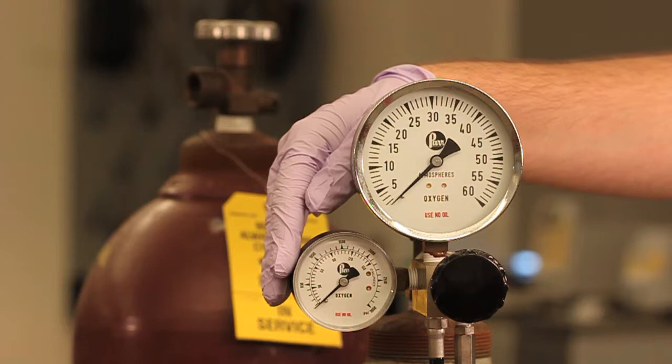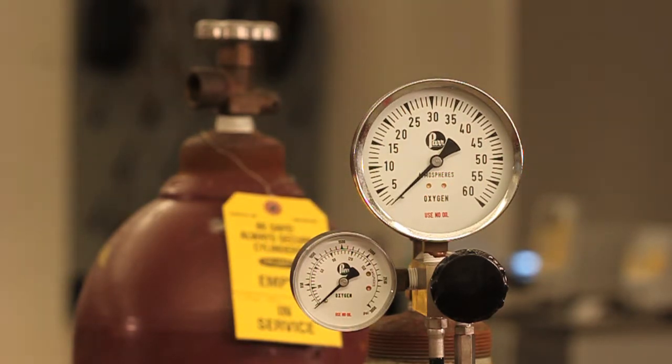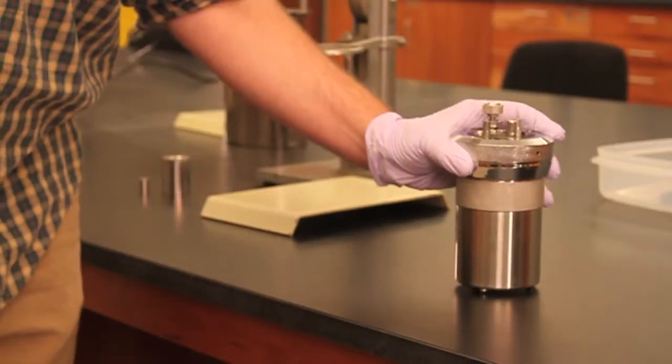One shows the pressure of the cylinder, and the other shows the pressure that is coming out of the regulator. Never move a gas cylinder while a regulator is still attached.